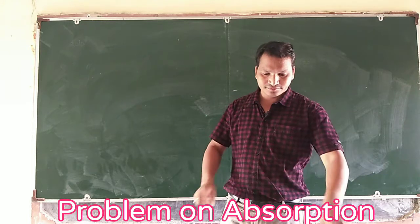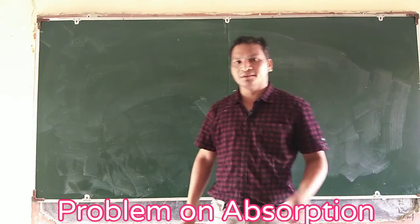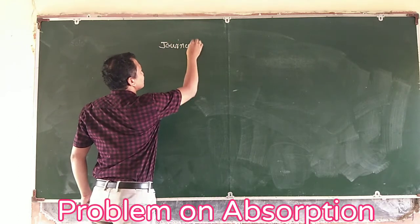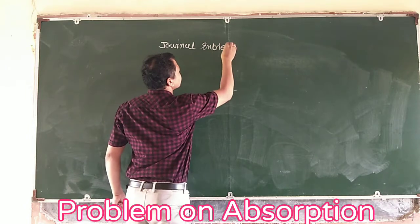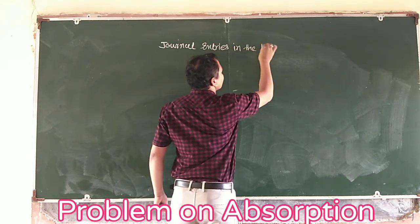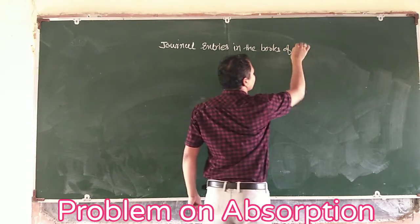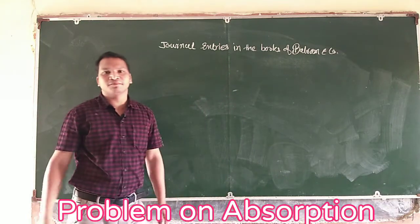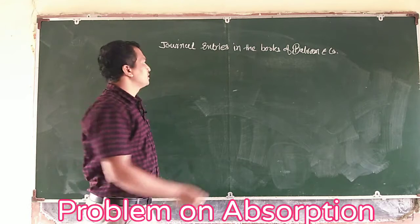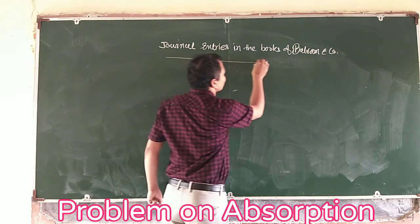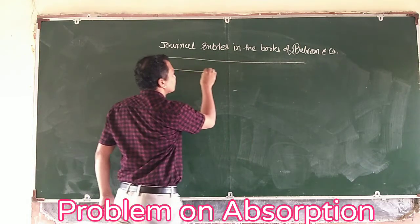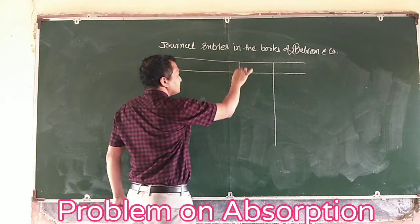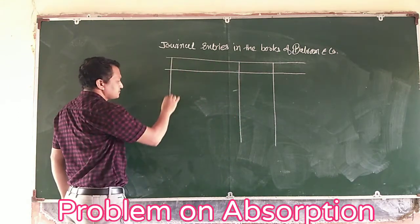Today we will record the journal entries in the books of Balaram Company Limited. Balaram is the absorbing company. The return-off company is recorded in the books of Balaram Company. We calculated the return-off company entries. When we talk about the absorbing company, we will also talk about the balance sheet accounts that need to be included.